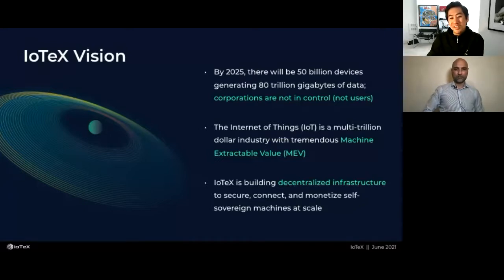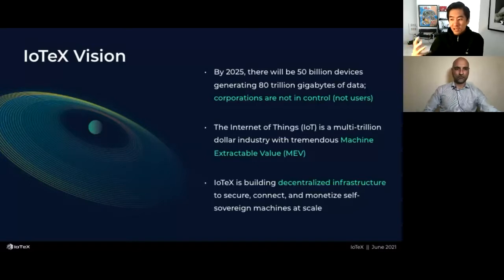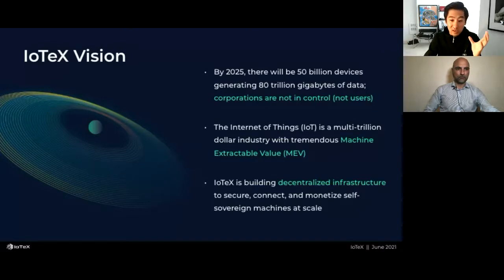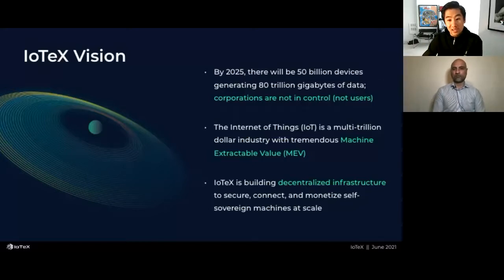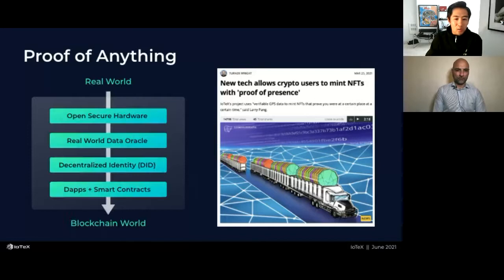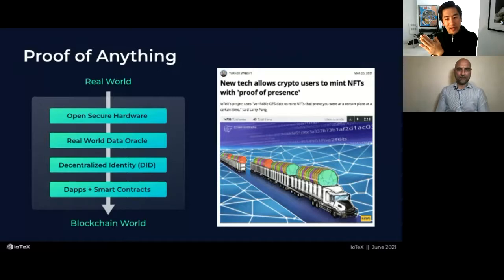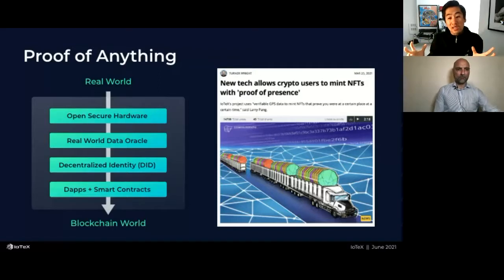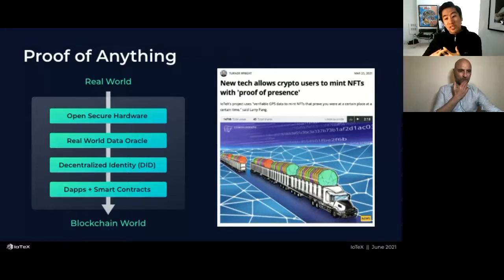When we started IOTEX in 2017, these problems were just starting to be understood, but over the past three years the need for security, privacy, and trust has grown enormously — especially as more things become automated in the digital and machine world. IOTEX works on a concept we call proof of anything: blockchains need a source of truth, and everyone's familiar with Chainlink bringing trusted price data from exchanges.